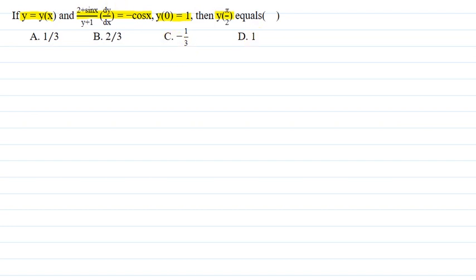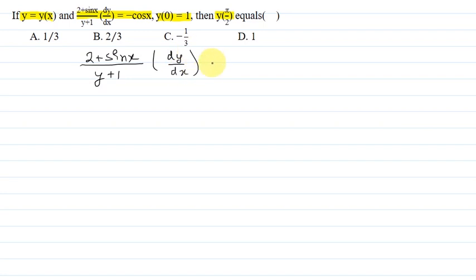What we have to do is find y(π/2). The given equation is (2 + sin x)/(y + 1) · (dy/dx) = -cos x. What we have to do is put the terms of y on one side and the terms of x on the other side.